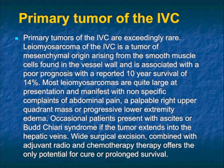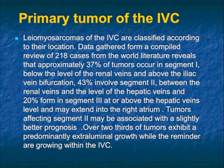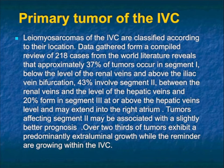Primary tumors of the IVC are rare. Leiomyosarcoma is a tumor of mesenchymal origin arising from smooth muscle cells found in the vessel wall, with poor 10-year survival. Occasionally patients present with Budd-Chiari. Wide excision is necessary. Over two-thirds of tumors exhibit predominantly extraluminal growth while the remainder grow within the IVC. The ones growing extraluminally, like this case — the challenge is distinguishing adrenal versus kidney versus IVC origin.